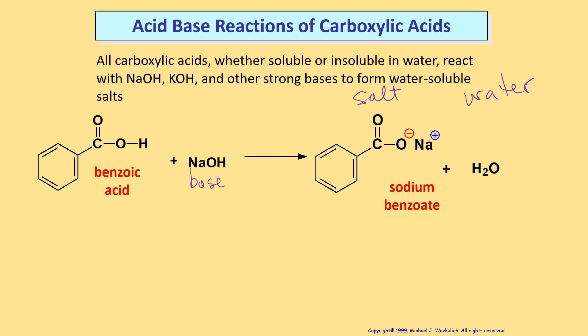This salt is called sodium benzoate. So the second part of the salt with the ion — we've already named those. Those are carboxylate ions, and you just say the name of the metal first. So acid plus base gives you salt plus water.